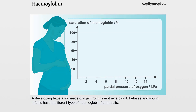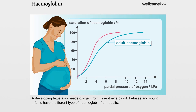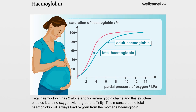A developing fetus also needs oxygen from its mother's blood. Fetuses and young infants have a different type of haemoglobin from adults. Fetal haemoglobin has two alpha and two gamma globin chains, and this structure enables it to bind oxygen with a greater affinity. This means that the fetal haemoglobin will always load oxygen from the mother's haemoglobin.